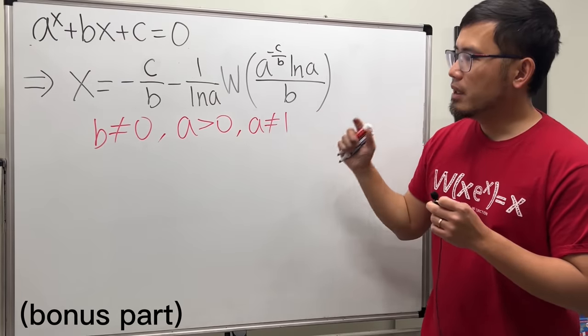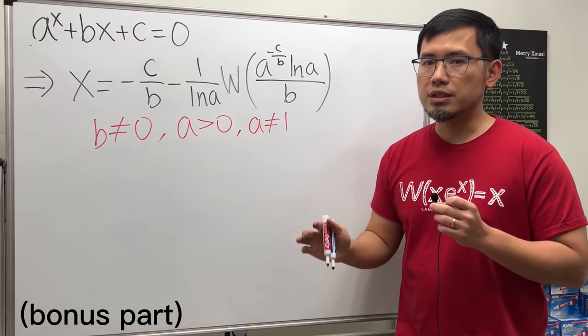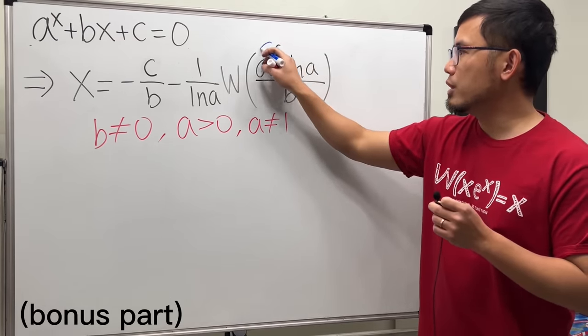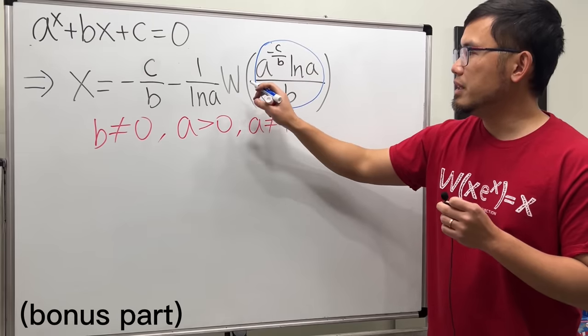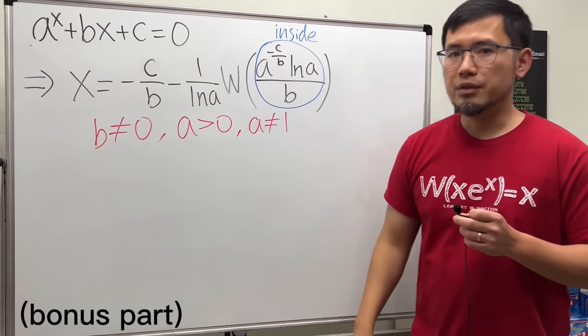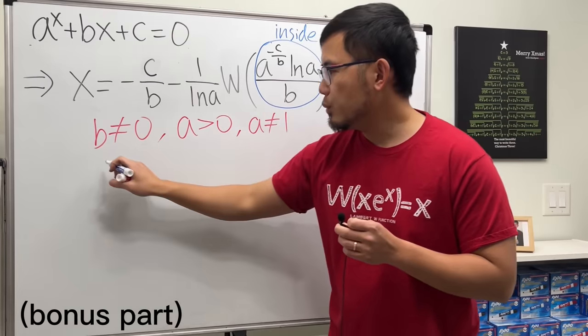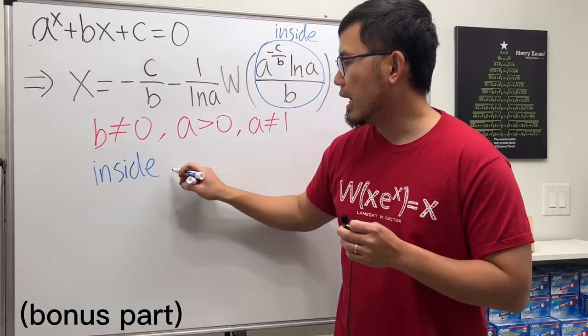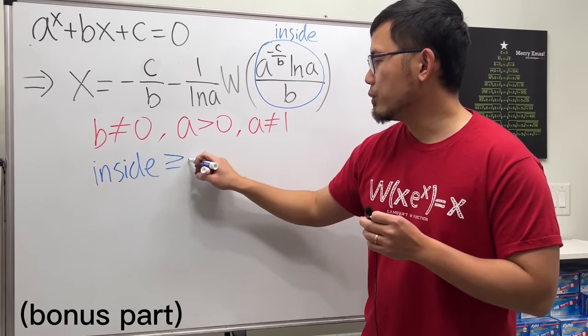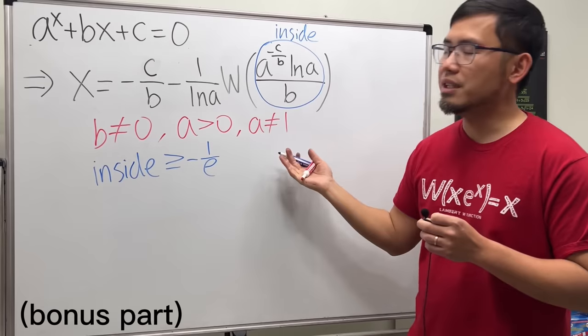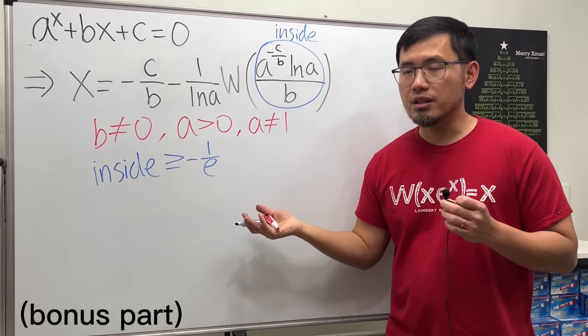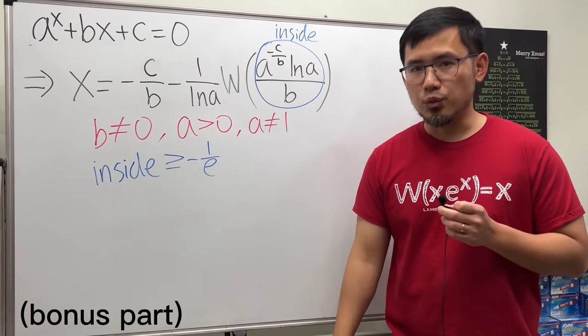Then, be careful. If you really want to have real solutions, then you also have to pay attention to the inside of the Lambert W function. If you just want real solutions, then we will have to make sure that the inside has to be greater than or equal to negative 1 over e. So these are pretty much the conditions in order for us to use this formula.